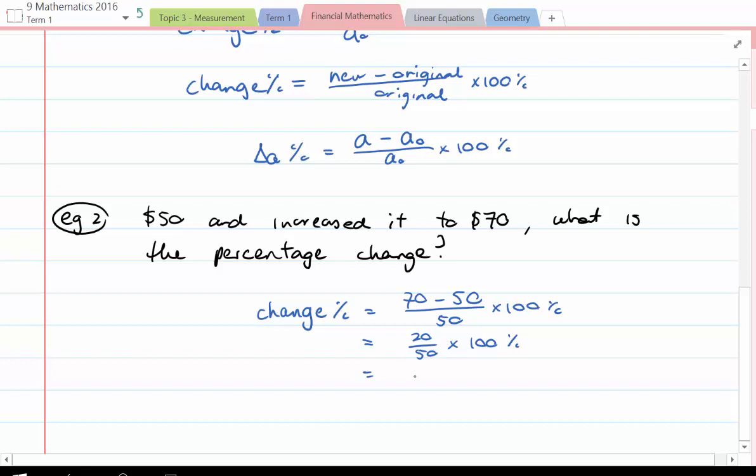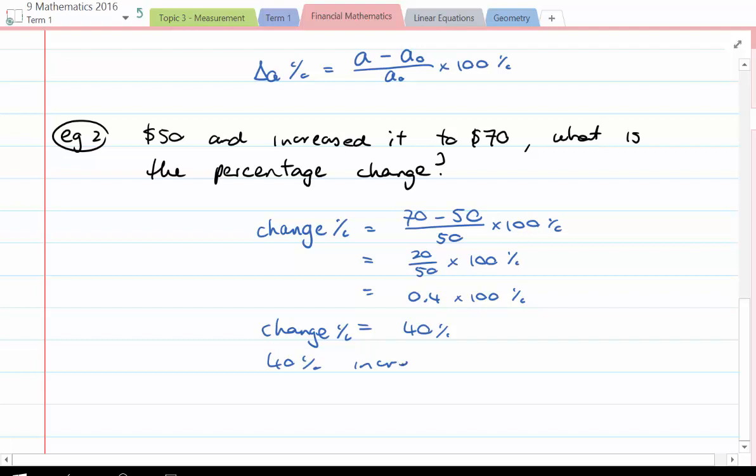20 on 50 is 0.4 multiplied by 100% and we end up then with 40%. Now because it's a change it'll either be an increase or a decrease. If it's positive then we know it's an increase. So that means we have a 40% increase.